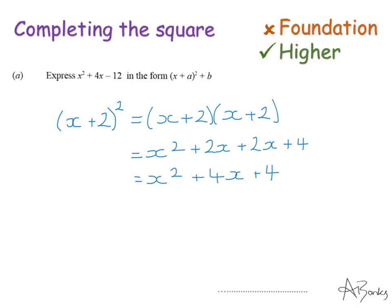You can see it is nearly what they want me to complete the square on. I get the x squared, I get the plus 4x. The only difference is the n number. I get a plus 4 instead of a minus 12.